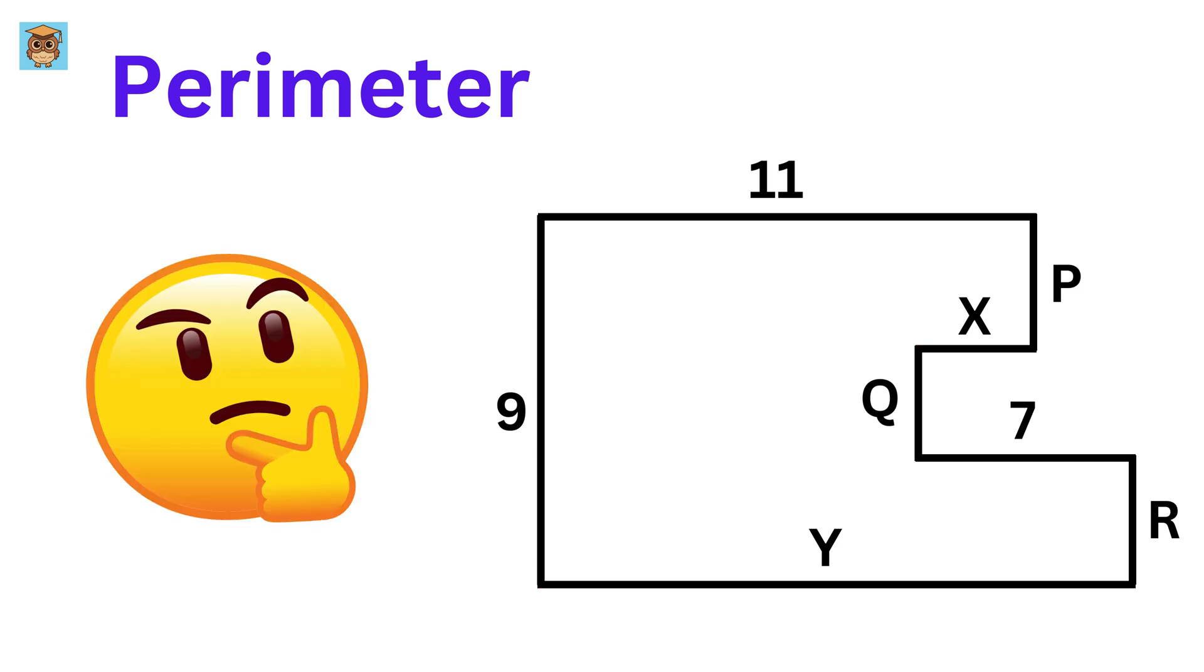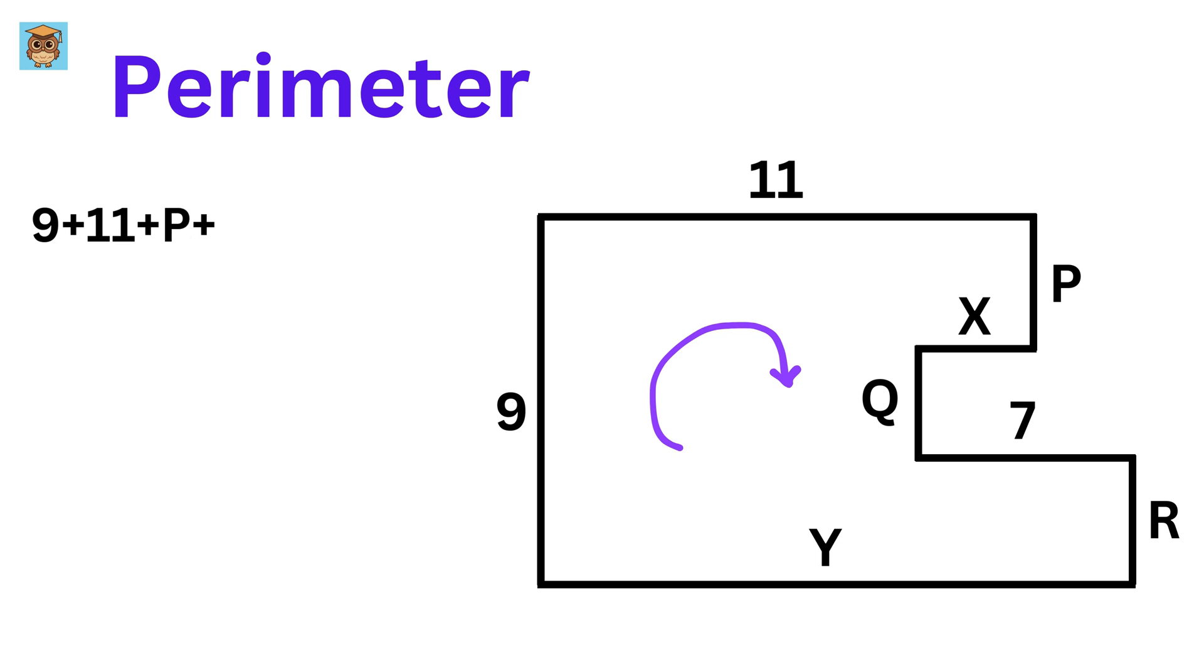So what will be the perimeter of this polygon? Let us move this way. So, it will be 9 plus 11 plus P plus X plus Q plus 7 plus R plus Y, right?